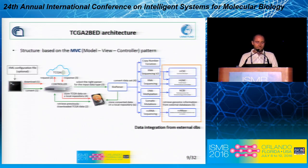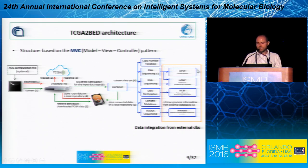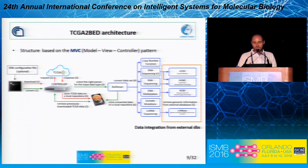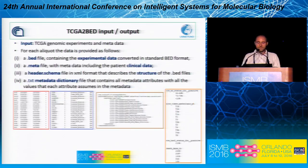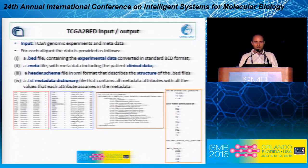You can see the TCGA to BED software architecture. I wish to highlight the integration with external databases like UCSC, HUGO genome nomenclature, NCBI, and MirBase in order to extend the data present in TCGA with additional genomic data and metadata. The inputs are the genomic experiments and the metadata downloaded from TCGA, and the outputs are a BED file, a metadata file, a header schema file, and a txt metadata dictionary where you can find all the metadata and their values.